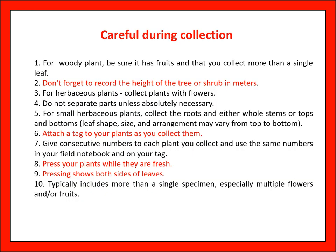Be careful during collection. For woody plants, be sure it has fruit and collect more than a single leaf. Record the height of the tree or shrub in meters. For herbaceous plants, collect plants with flowers and do not separate parts unless absolutely necessary. For small herbaceous plants, collect the root and either the whole stem or the top and bottom. Attach a tag as you collect. Give a consecutive number to each plant and use the same number in your field notebook and on your tag. Press plants while they are fresh, showing both sides of leaves, and include more than a single specimen, especially multiple flowers and all fruit.